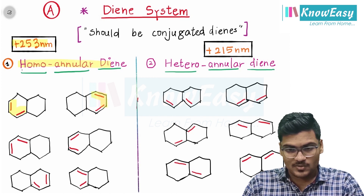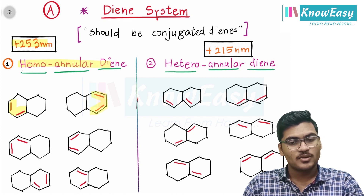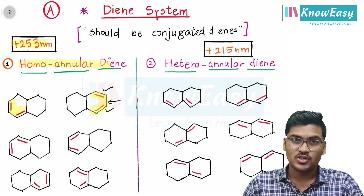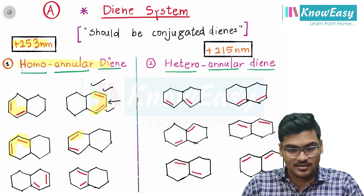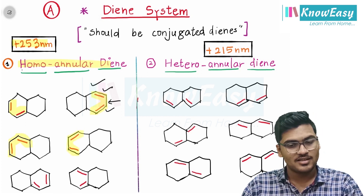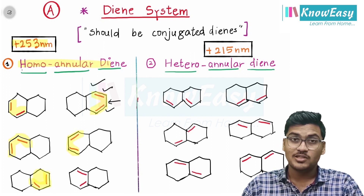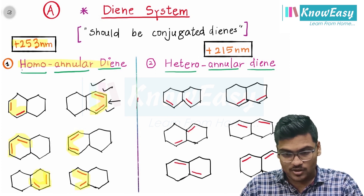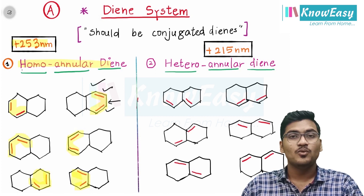Sometimes they give structures like this — just look at the two bonds. These two double bonds are separated by a single bond, so they are in conjugation and lie in the same ring, making it a homoannular diene. This is also a homoannular diene — double bond, single bond, double bond in the same ring. Here also double bond, single bond, double bond — so this is also an example of homoannular diene.